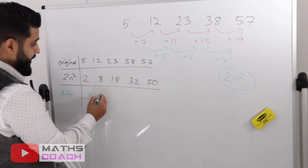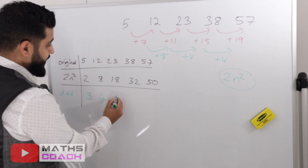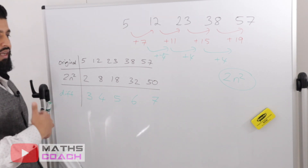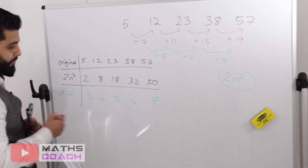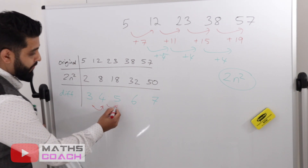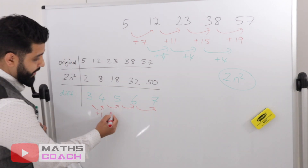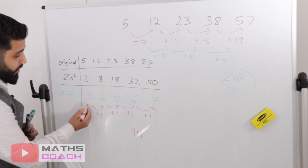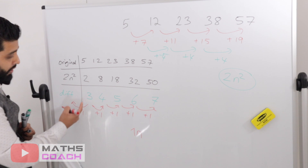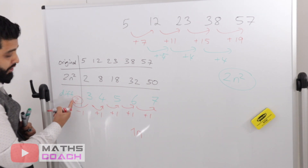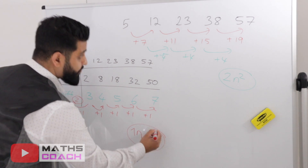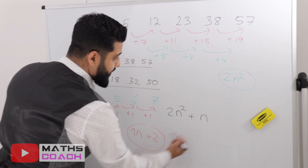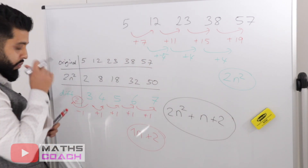Find the differences between the original and 2n squared: 5 minus 2 is 3, 12 minus 8 is 4, 23 minus 18 is 5, 38 minus 32 is 6, 57 minus 50 is 7. This is a linear sequence. The difference each time is add 1, so we write 1n. Going backwards from the first term: 3 minus 1 is 2, so plus 2.